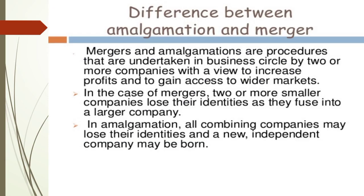Many students get confused about the difference between amalgamation and merger. Merger and amalgamation are procedures undertaken in business by two or more companies to increase profit and gain access to wider markets. In a merger, two or more smaller companies lose their identities as they fuse into a larger company. But in amalgamation, all the combining companies lose their identities and a new independent company is formed.